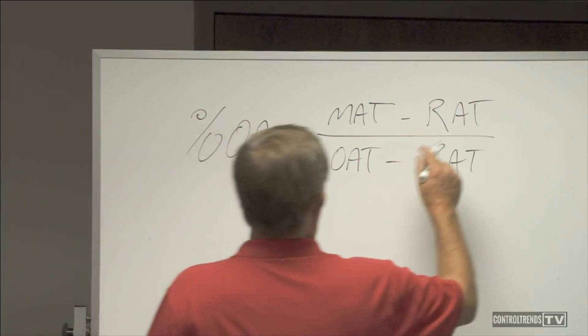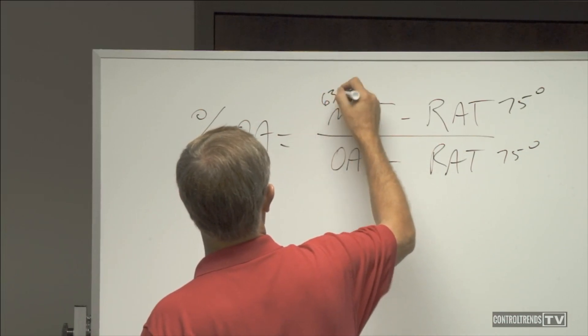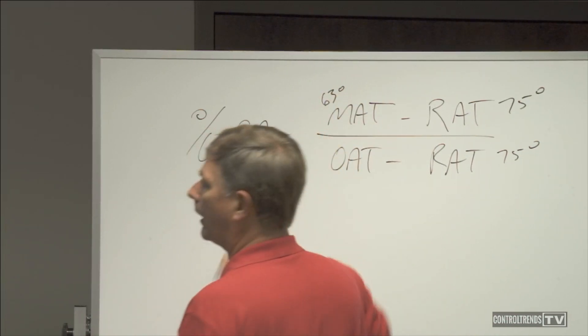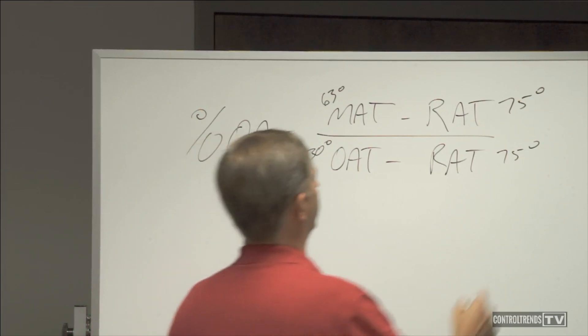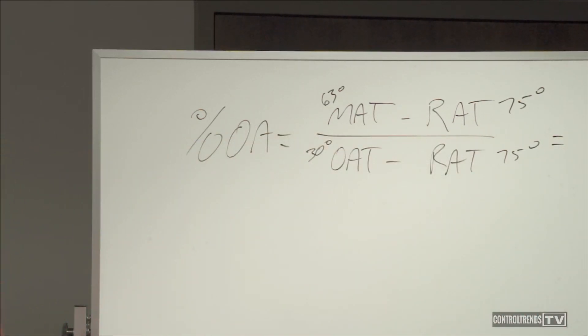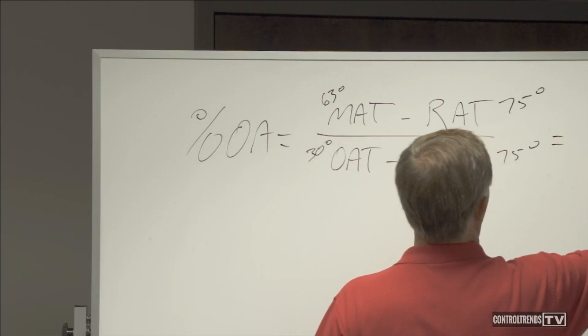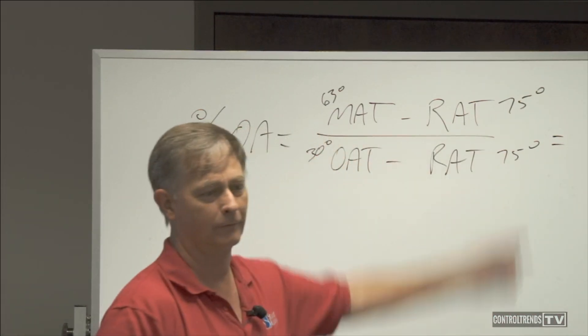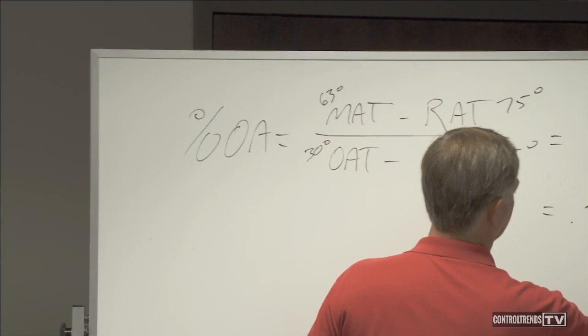If we said our return air is 75 degrees, mixed air, this is saying it's 63 degrees. Outside air, they were saying it is 30 degrees. So, what do we have here? This is advanced math, isn't it? Somebody want to work the math for me? We have all these smartphones in this room. What's the difference between 63 and 75? What's the difference between 30 and 75? All right. 12 divided by 45 equals?